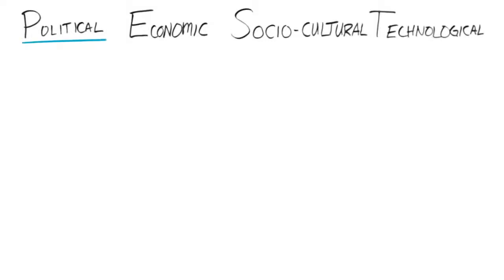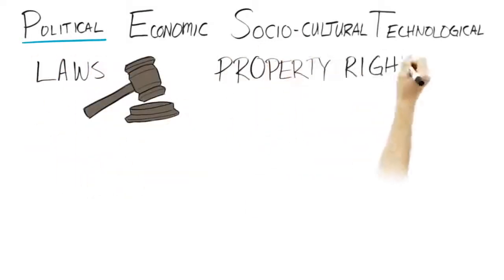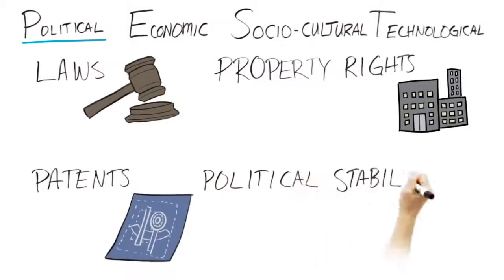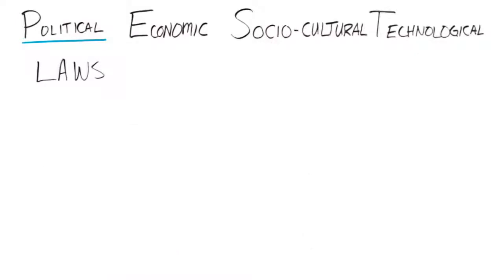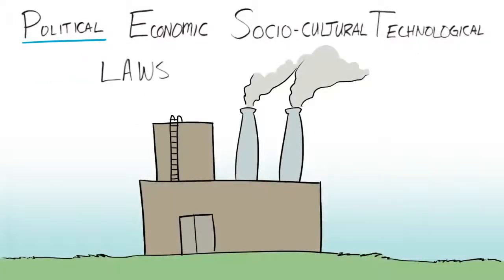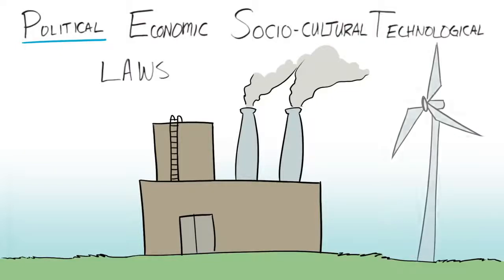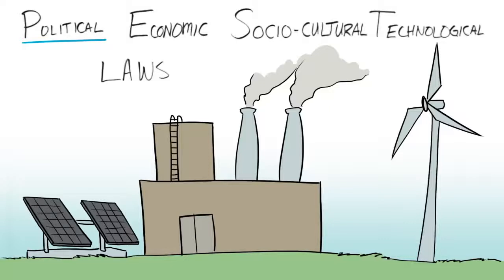First, political factors refer to laws, property rights, patents, political stability, and so forth. Laws can drastically impact the nature of the business environment. Consider recent laws requiring a certain percentage of electricity to come from renewable sources. These laws have increased demand for wind turbines, solar panels, and other renewable energy sources.